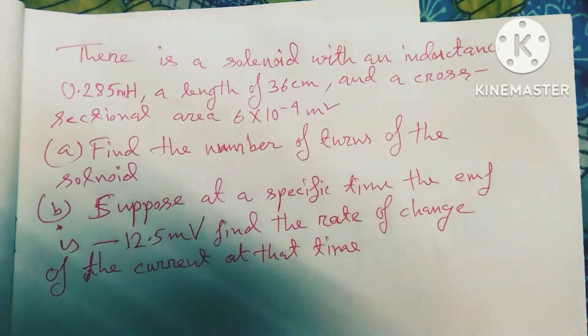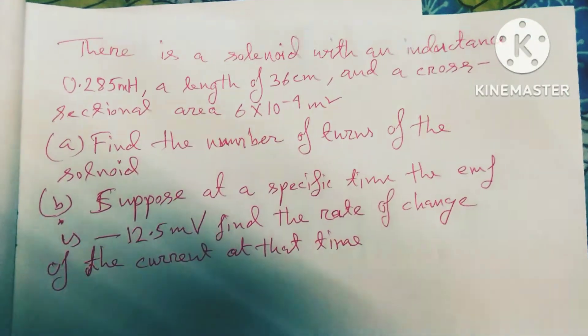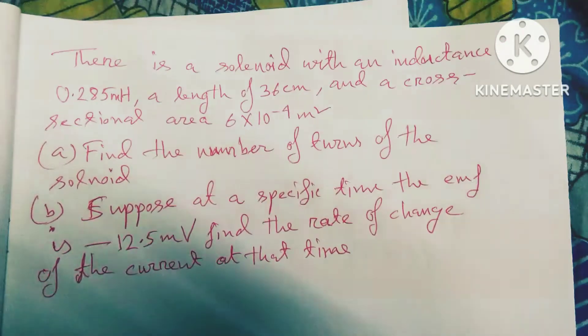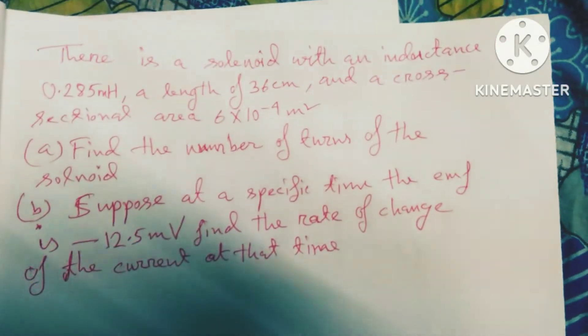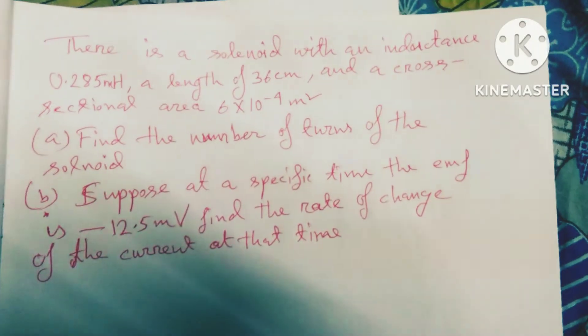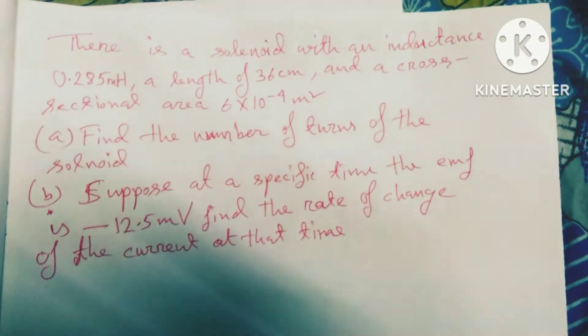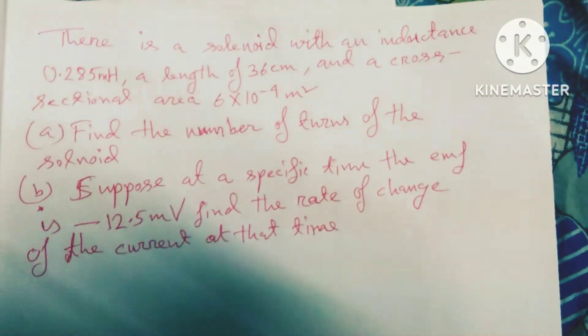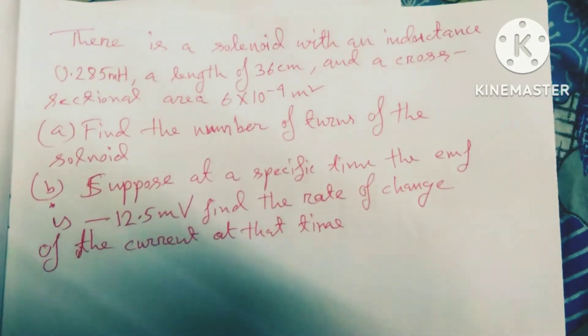Friends, welcome to my channel. Today's discussion is a self-inductance problem. There is a solenoid with an inductance of 0.285 millihenry, a length of 36 centimeters, and a cross-sectional area equal to 6×10^-4 meter squared.